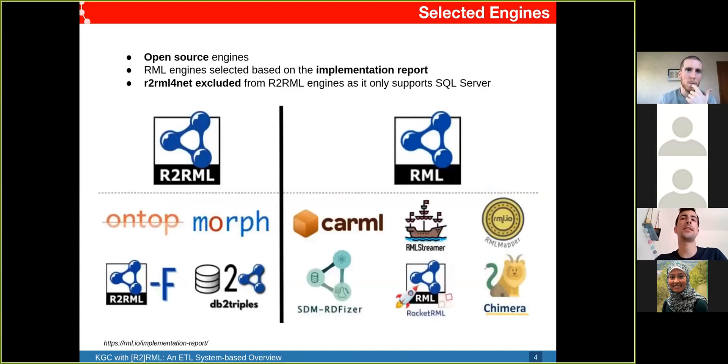In our overview we selected a bunch of engines, not all of them. The selection criteria were that they have to be open source. For the RML engines we relied on the implementation report and took all the engines listed there. For R2RML we couldn't rely on the implementation report because it was outdated, so we selected some of the most well-known ones and excluded R2RML for .NET because it only supports SQL Server.